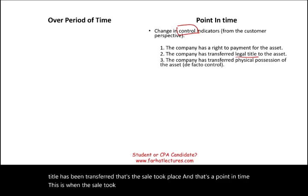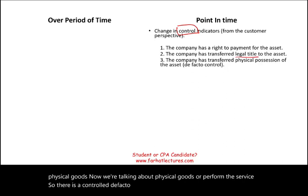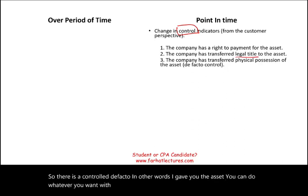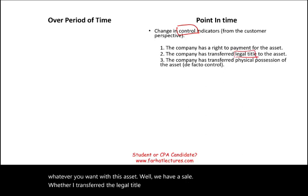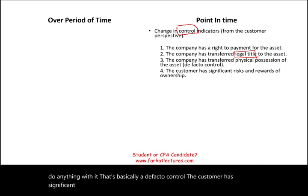Third indicator: the company transferred the physical goods or performed the service, so there is de facto control. In other words, the asset was given and the customer can do whatever they want with it — whether or not the legal title was formally transferred. If you have the asset and you can do anything with it, that's de facto control.